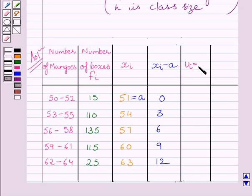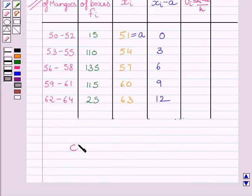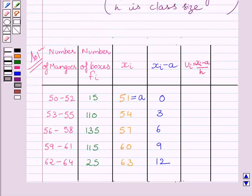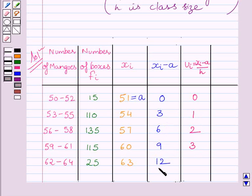Here we can write UI is equal to XI minus A upon H, and H is the class size. We know that 3 is the class size of each of the discrete class intervals, so H is equal to 3. Therefore: 0 divided by 3 is 0; 3 divided by 3 is 1; 6 divided by 3 is 2; 9 divided by 3 is 3; and 12 divided by 3 is 4.